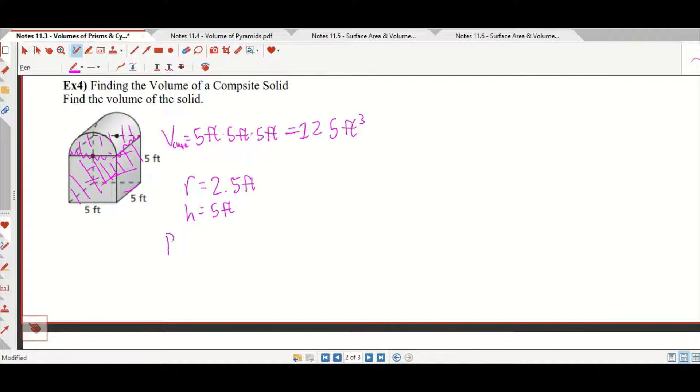So the area of the base is equal to the radius squared times pi. 2.5 squared is 6.25, so the area of the base is 6.25 pi feet squared, except it's not because it's only half of that. That's half of a circle, so you've got to divide that by 2.